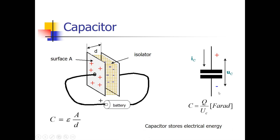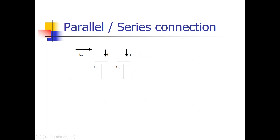One important aspect of a capacitor is that it stores electrical energy. Let's look at the series and parallel connections of capacitors in a circuit. When we put two capacitors in a parallel connection, we can add these capacitances up to a replacement capacitor. The replacement capacitance value of a parallel network is equal to the sum of all the capacitances, so here it is C1 plus C2.